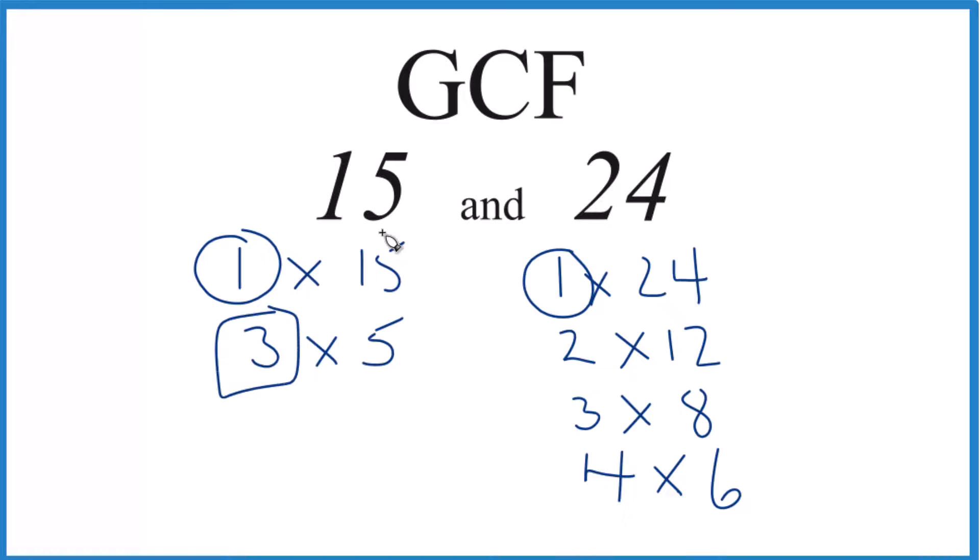What about 3? 3, that goes into both of those. Is there anything else? It doesn't look like. That means that 3, that's the greatest common factor for 15 and 24.